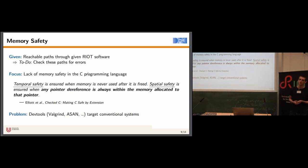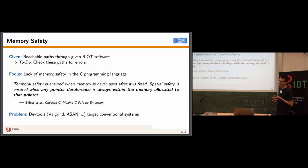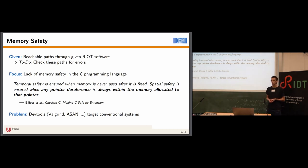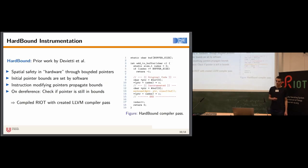When testing conventional Linux software, you can use existing development tools like Valgrind or AddressSanitizer to test for violations of spatial or temporal safety. But these tools primarily target conventional Linux systems. We cannot use Valgrind or AddressSanitizer for SymEx-VP since we execute embedded RISC-V software, which is not supported by those tools. Instead, we leverage prior work on HardBound.